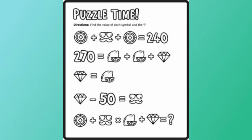On puzzle time, the first line says a poker chip plus the mustache disguise plus poker chip equals 240. I have no idea where to begin with that, so I move down to the second line. It says 270 equals the lemon lime plus the lemon lime plus the diamond. Again, I have no idea where to start with that, so let's move on.